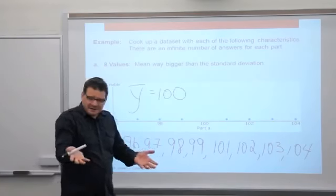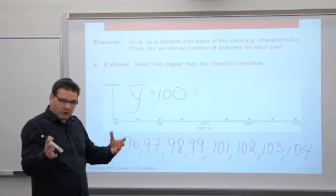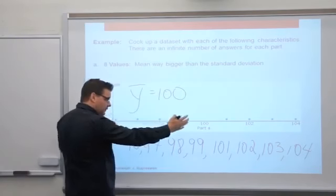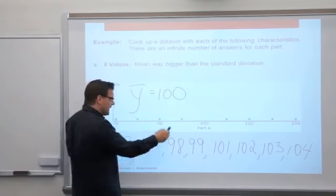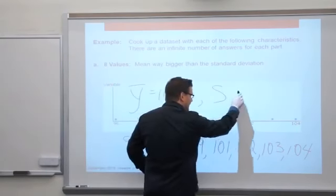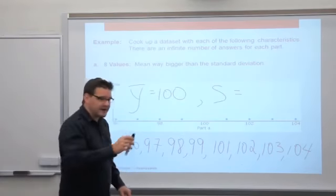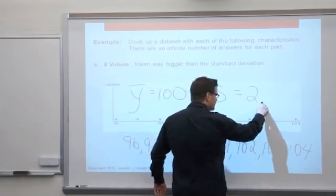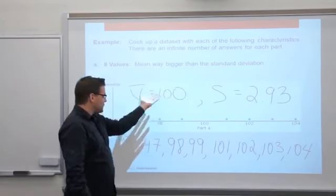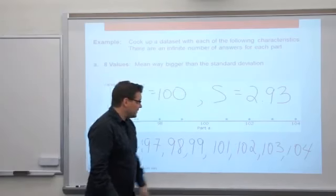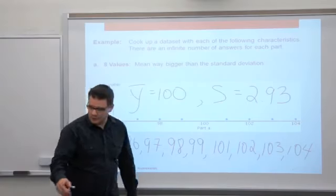If I asked you in class to guess the standard deviation, I hope you would say something around one or two. All the data points are about one or two away from the mean. S turns out to be 2.93. So we're centered at 100 for our mean, and that's way bigger than the standard deviation of 2.93. That was Part A — we'll move on to B.